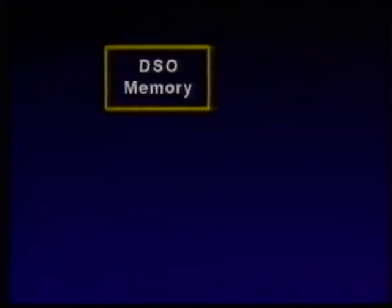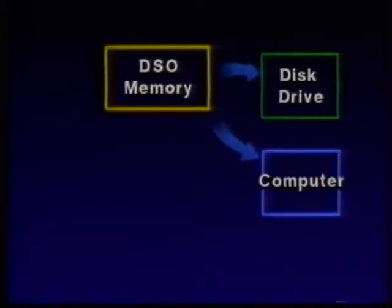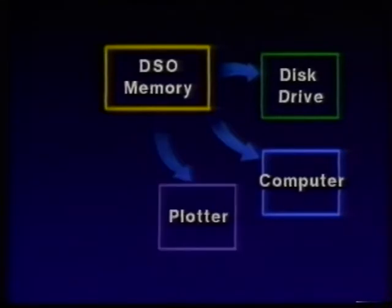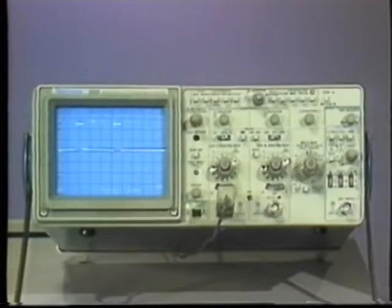The numerical data can also be stored in another internal memory or transferred to an external device, such as a disk drive for long-term storage, a computer for more information processing, a hard copy device like a plotter or printer, or a combination of all these devices. That's a brief hardware overview of a digital storage oscilloscope.